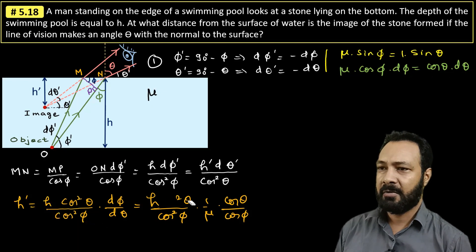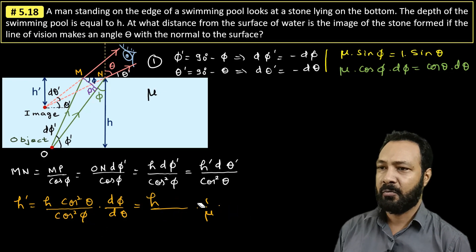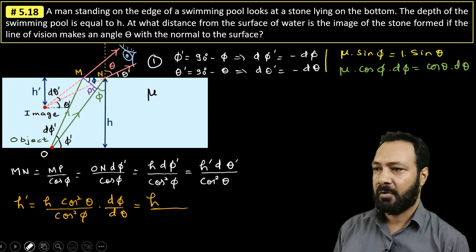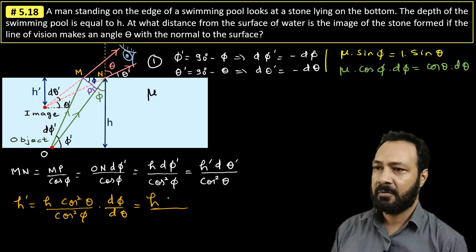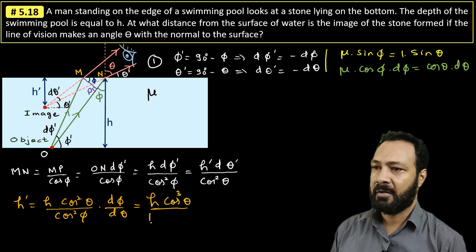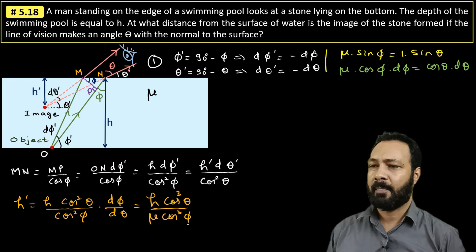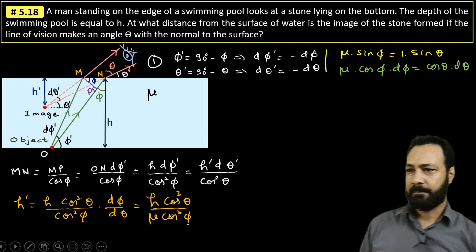So simplifying: cos²(theta) times cos(theta) gives cos³(theta), and cos²(phi) times cos(phi) in the denominator gives cos³(phi). So h-dash = h · cos³(theta) / (mu · cos³(phi)). Now we will substitute cos(phi) in terms of theta.